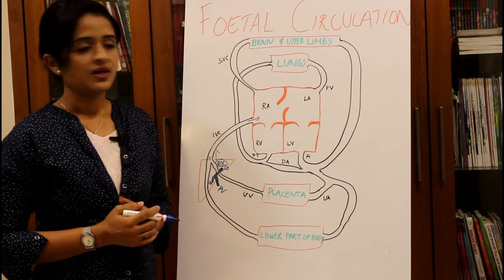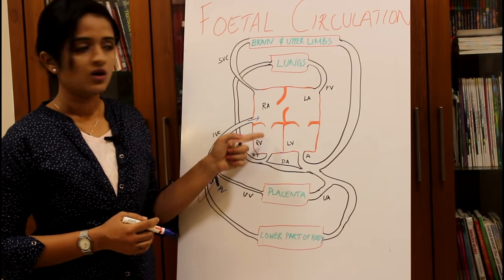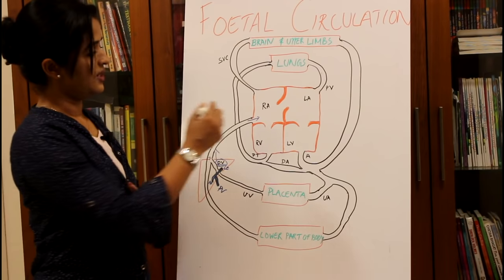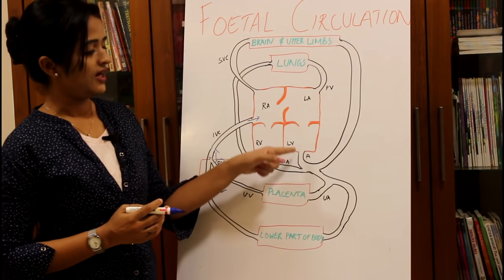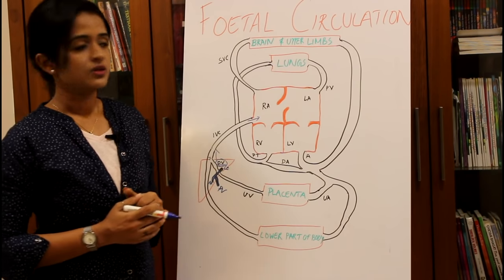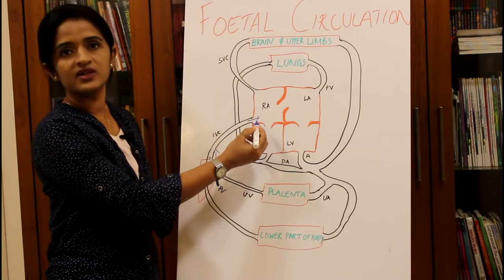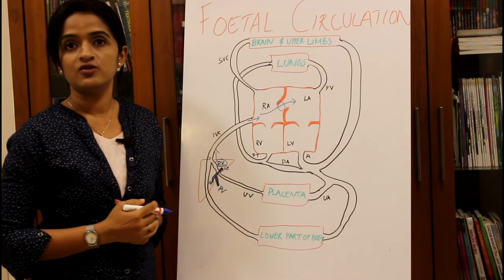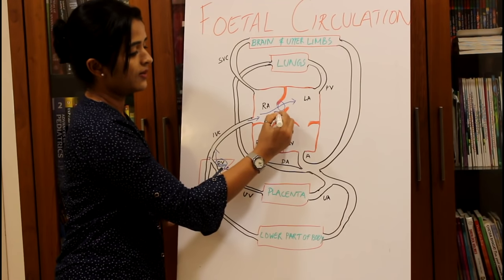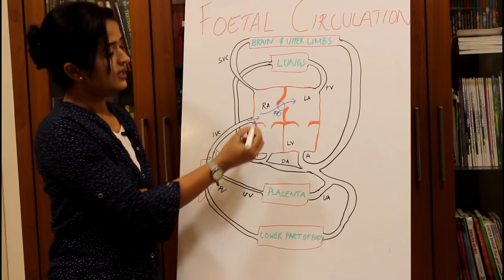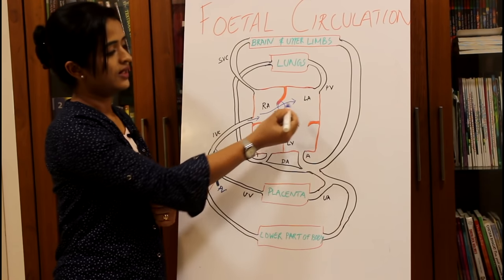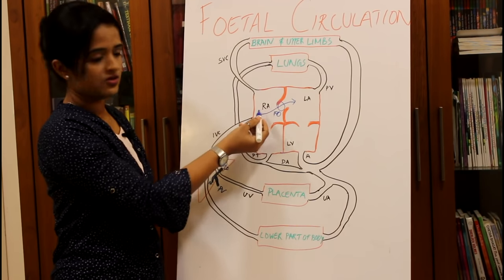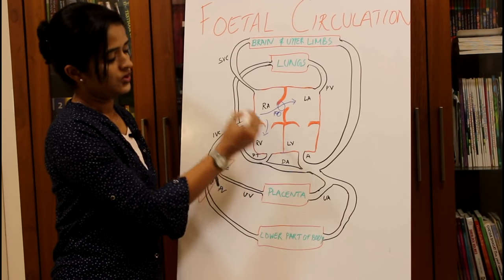Blood in the right atrium has two options: it can either enter the right ventricle or the left atrium. Since the aim is to carry blood through the aorta to reach the brain, a large quantity of blood coming through the inferior vena cava is shunted through a foramen in the inter-atrial septum called the foramen ovale into the left atrium. A minimal amount still passes to the right ventricle.